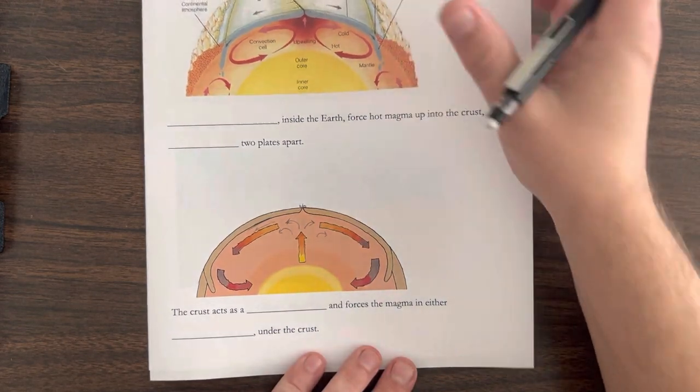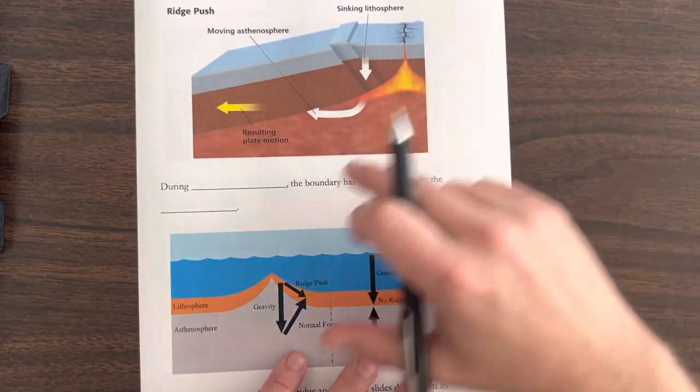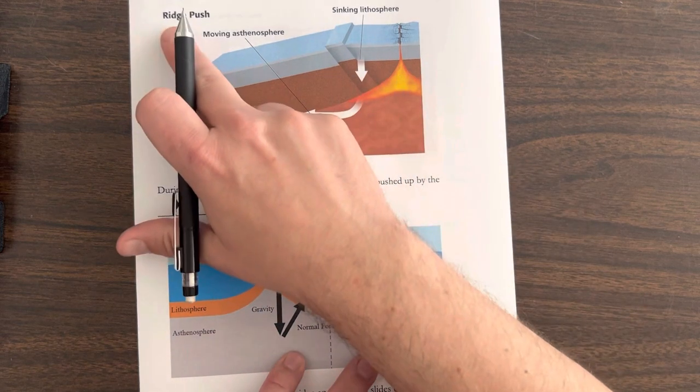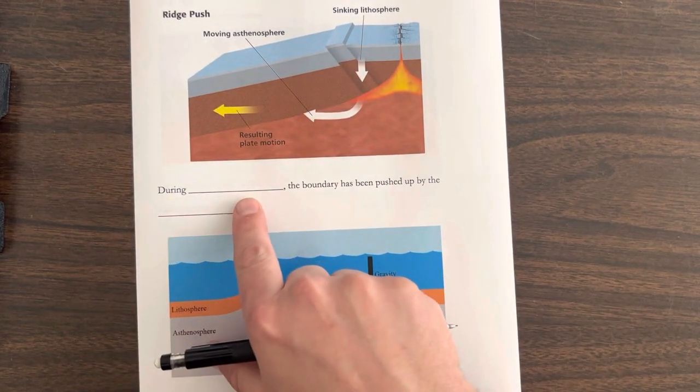But besides that friction, there's a couple of other things going on as well. So there's friction underneath from the magma. But let's take a look at something called ridge push. So during ridge push...